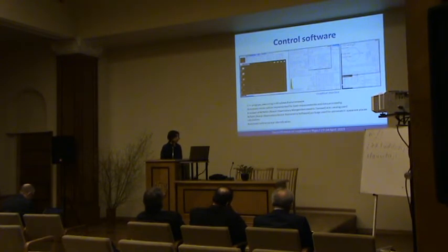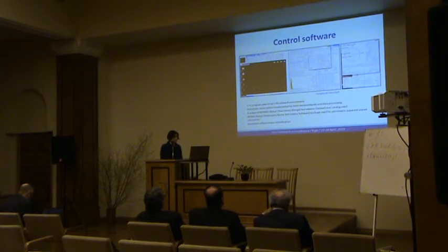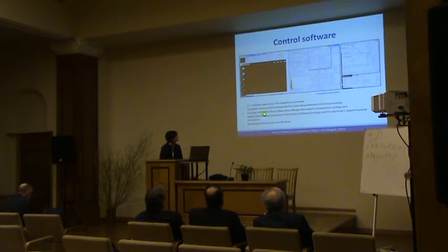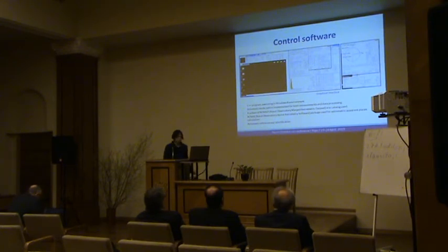Here you can see part of the graphical interface. The control software is based on a C++ program executing in a Windows 8 environment. An automatic measurement and data processing mode is implemented. A subset of the NOMAD star catalog is used, and the NOMAD package is also used for astrometric apparent place calculation. Automatic reference star identification is also implemented.